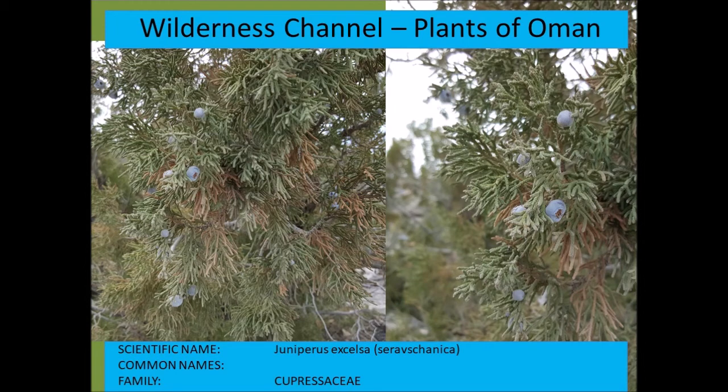Juniperus excelsa or seravschanica — not sure how to pronounce it — but this is a juniper species, possibly with a changed name now. Found in the mountains of northern Oman in the Hajar mountains. One of the juniper species.